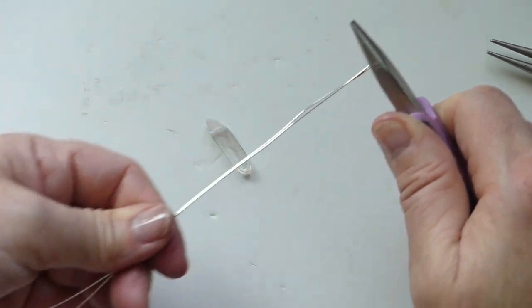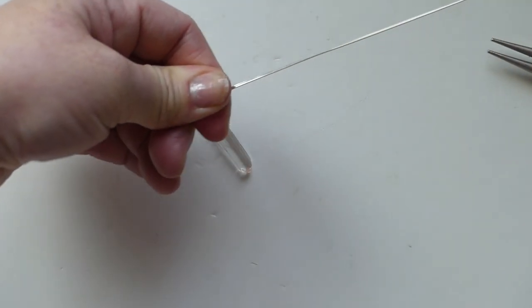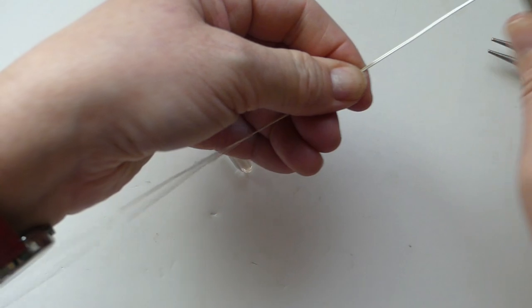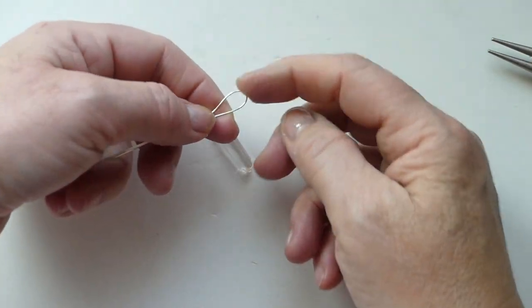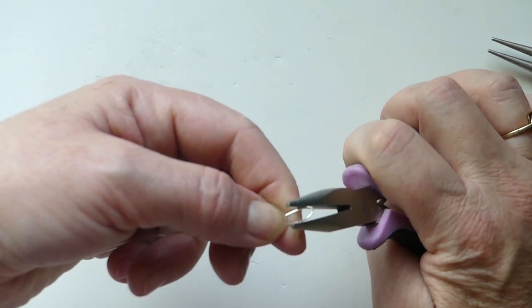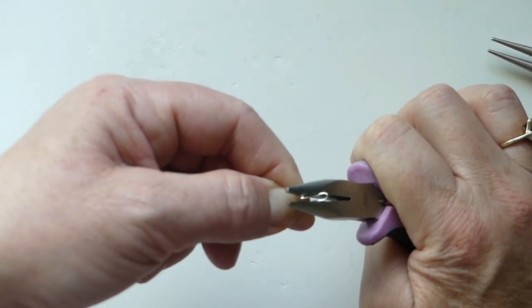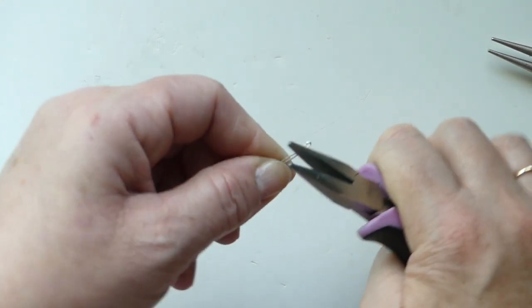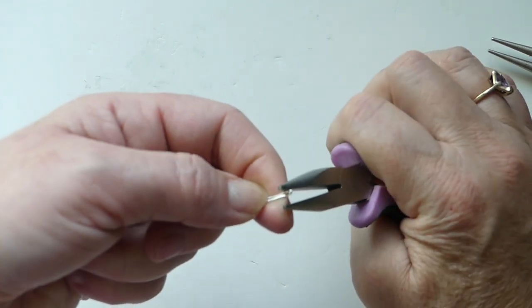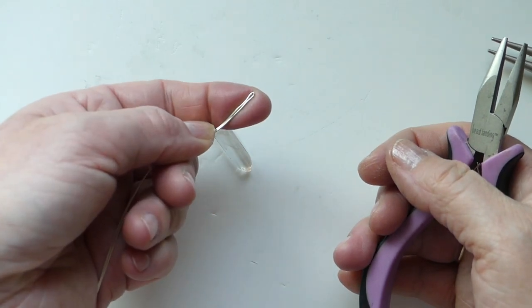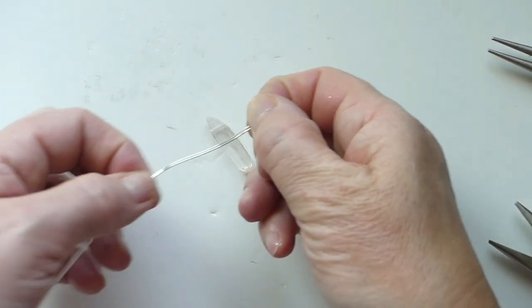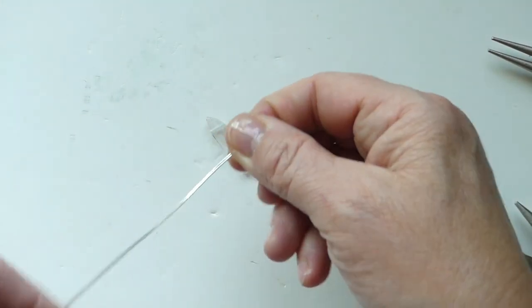Once again, I'm giving it a pull. So that we end up with our little loop at the end. And then that we flatten out. As much as possible. It doesn't have to be perfect. So this is what we're going for.